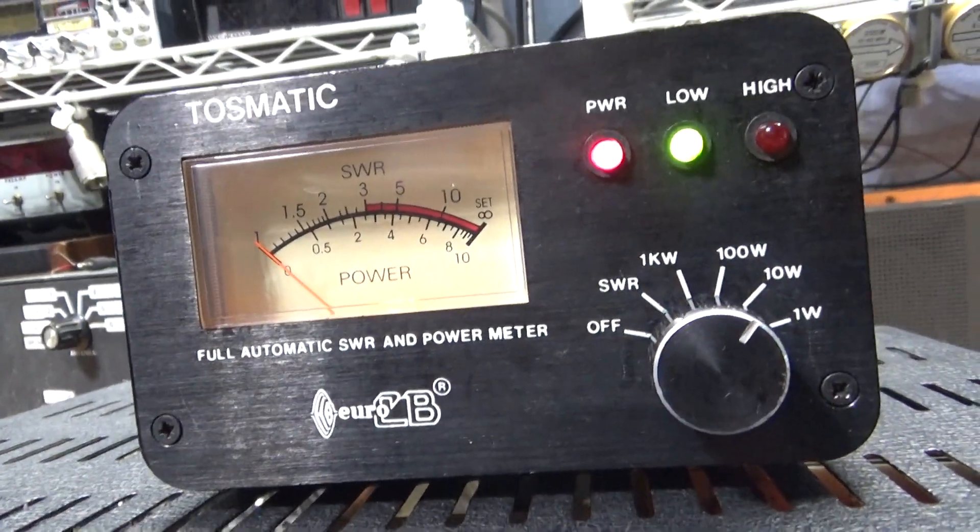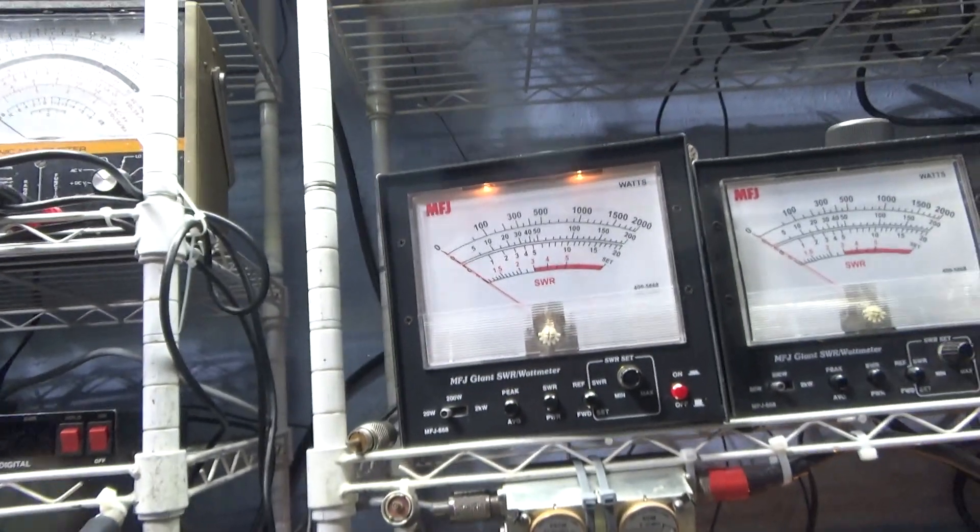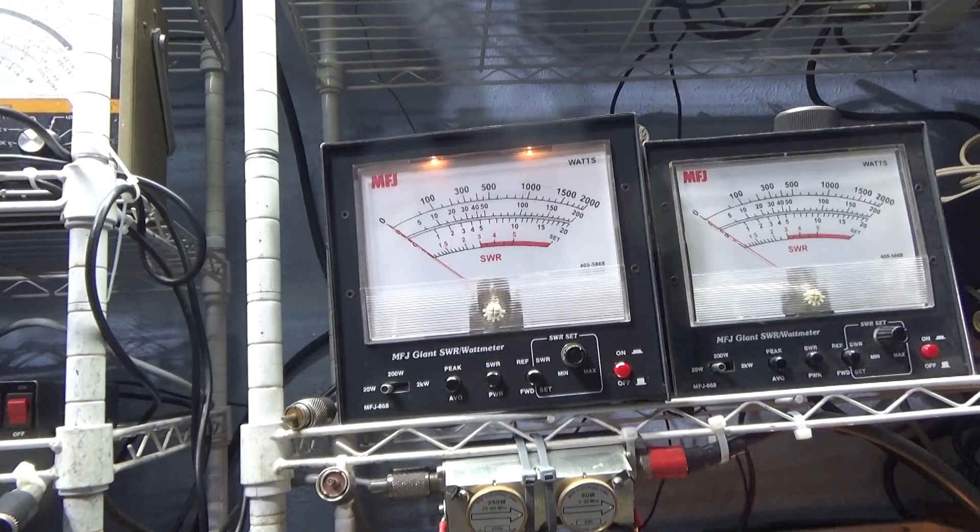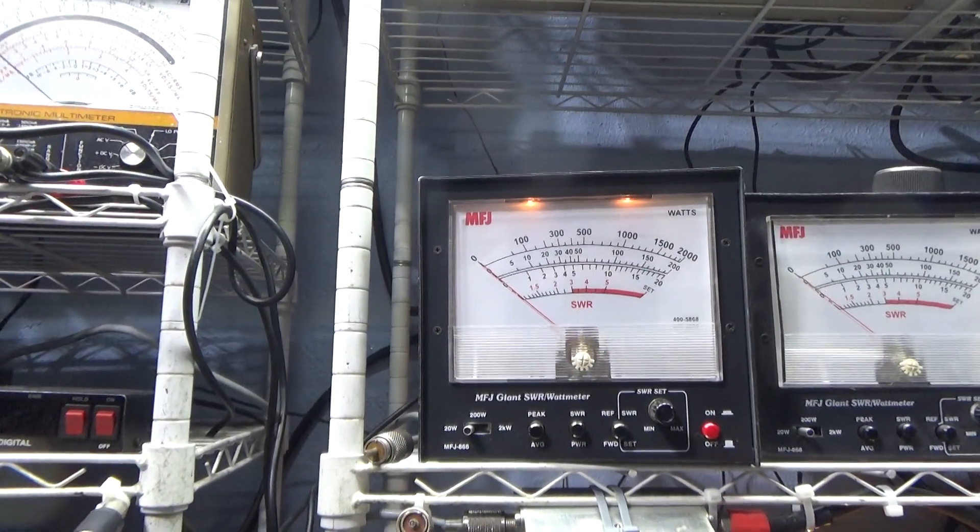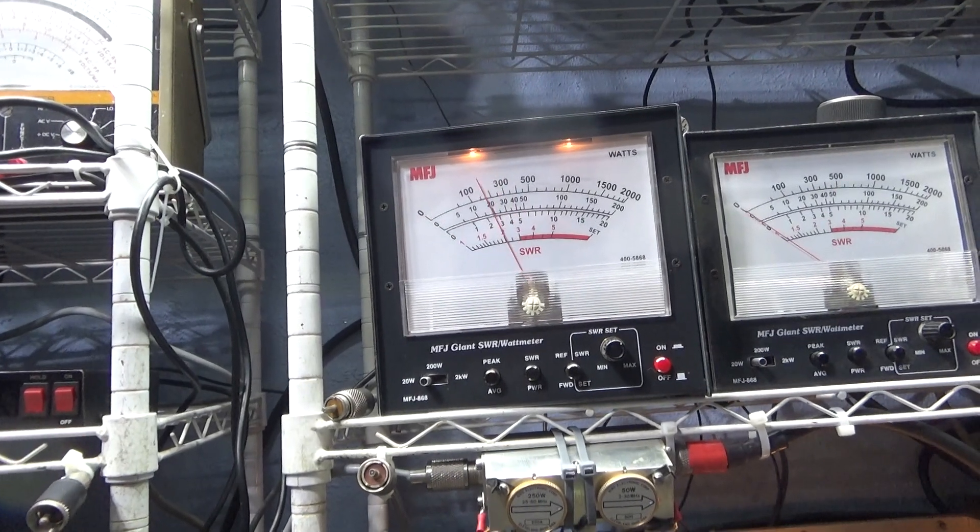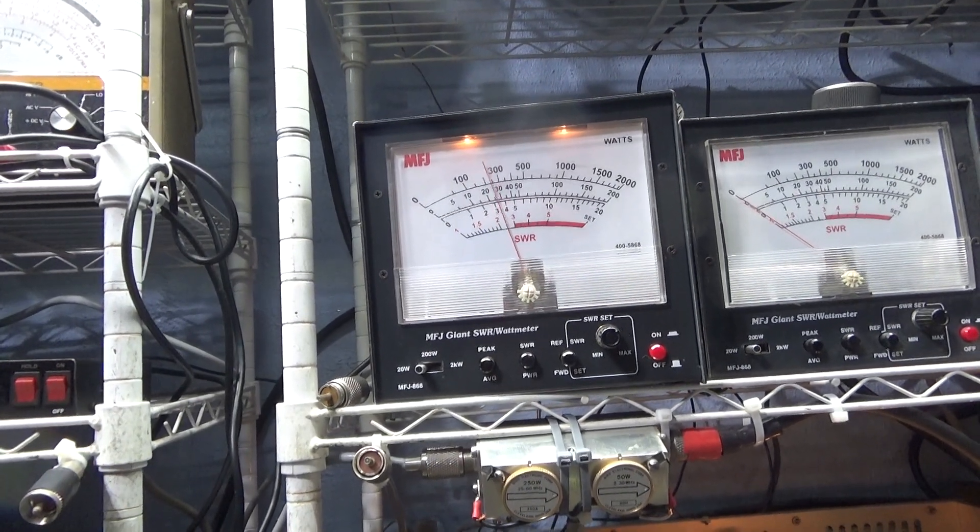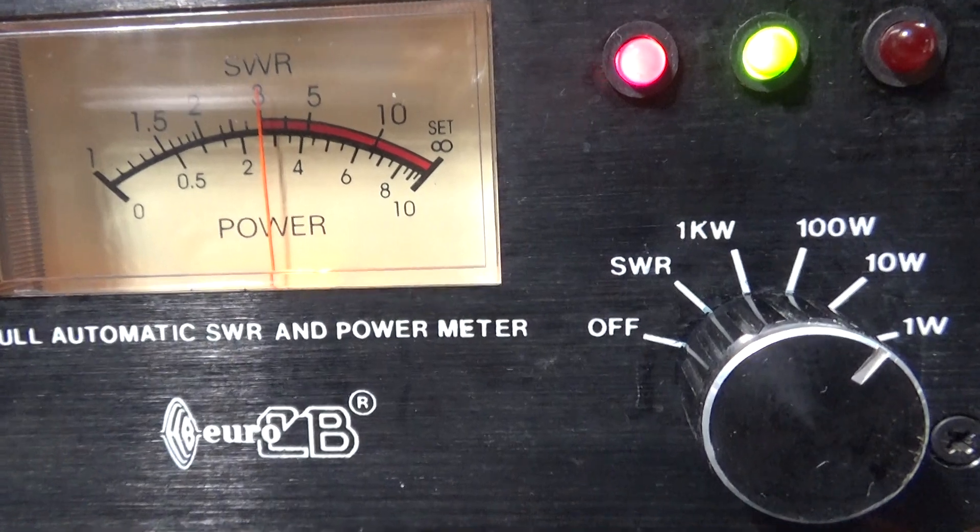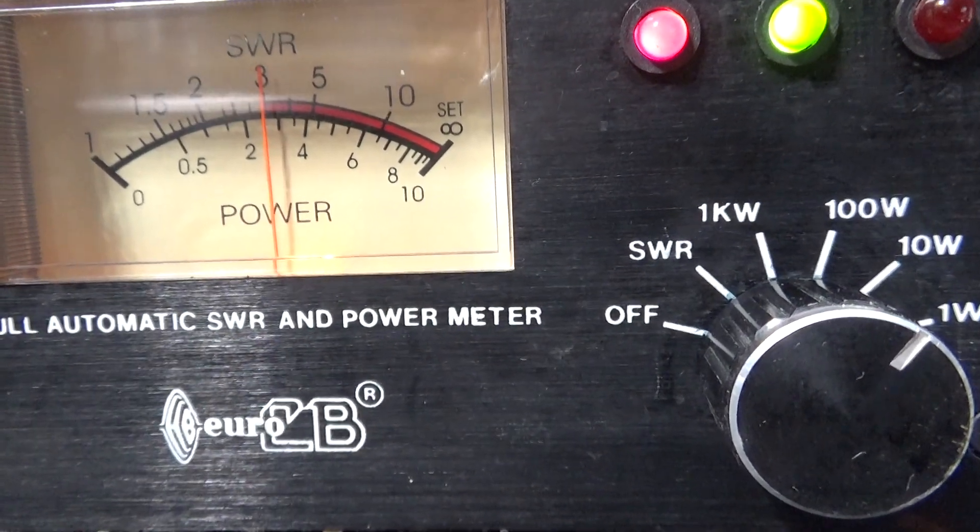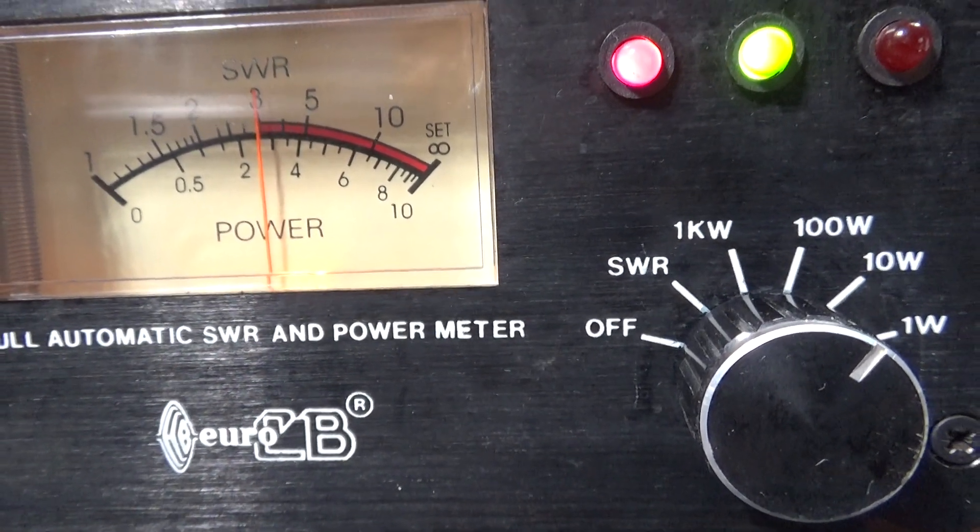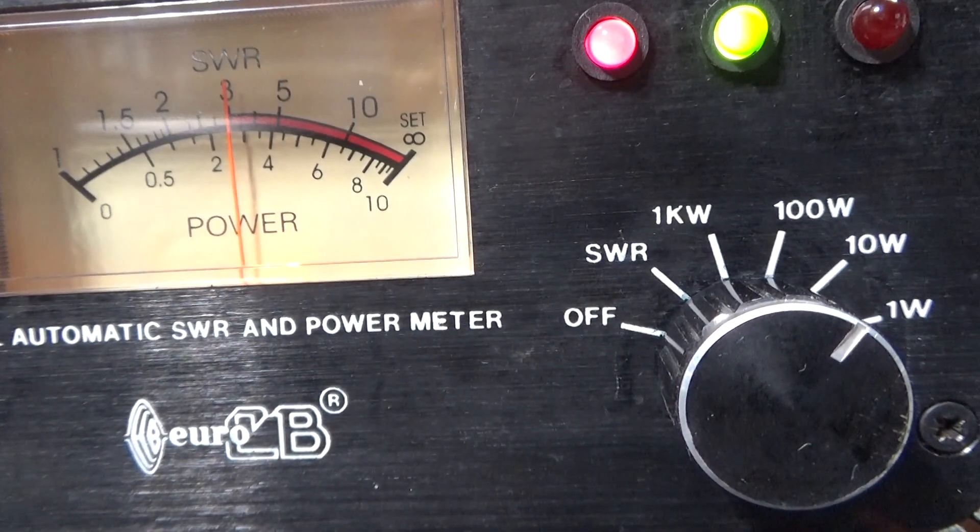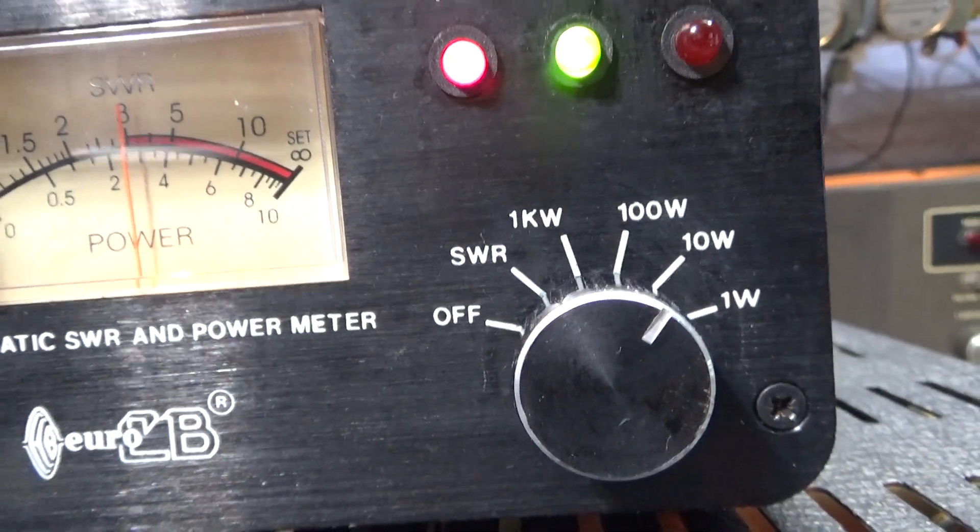Anyway, I got the MFJ's over there calibrated to a bird, and I got it on average. Right now that's on the barefoot, keying about two and a half, talking about six on average. And if you look over here at the Tosmatic, it's keying a little over two and a half. So the dead key is pretty close, well actually it looks like three.